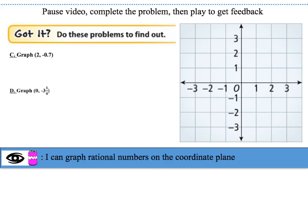Pause the video, complete the problems, then play it back for feedback. For letter C, the graph would be in quadrant 4. For point D, it would be located on the y-axis and is not in any quadrant.